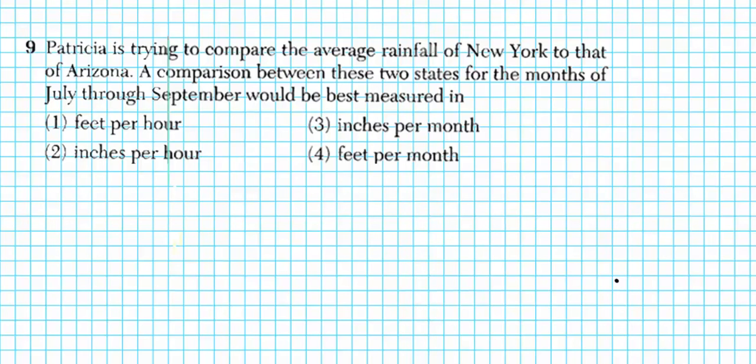Let's take a look at number 9. It says, Patricia is trying to compare the average rainfall in New York to that of Arizona. A comparison between these two states for the months of July through September will be best measured in. So we're looking at the unit for the quantity of rainfall divided by the time. We're looking at quantity over time, quantity per time.